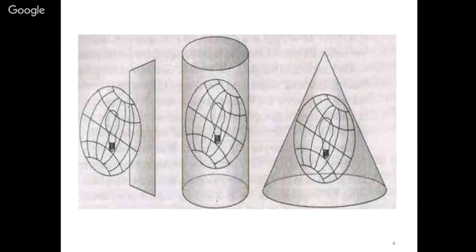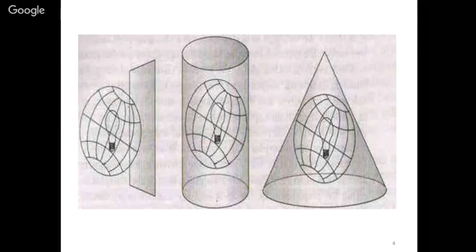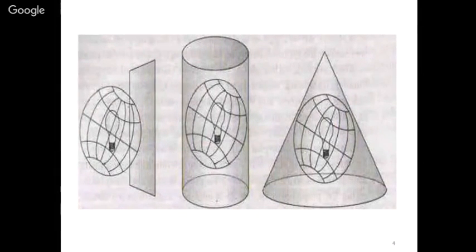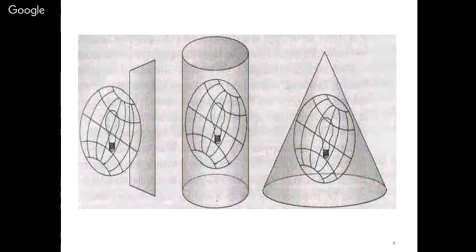Before starting the discussion of UTM/UPS system, we need to know something about projections. Projections happen to be a part of this discussion. Basically we have three families of projections: number one planar projections, taken on a plane sheet; number two cylindrical projections, which will be our area of interest when talking about UTM and UPS; and thirdly the conical family of projections.